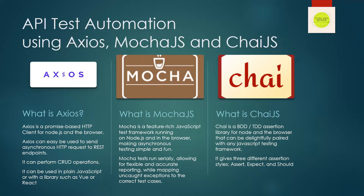What is MochaJS? MochaJS is a feature-rich JavaScript test framework running on Node.js and in the browser, making asynchronous testing simple and fun. Mocha tests run serially, allowing for flexible and accurate reporting while mapping uncaught exceptions to the correct test cases.